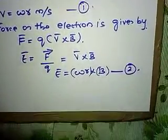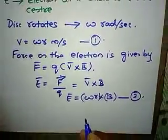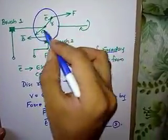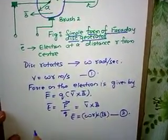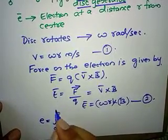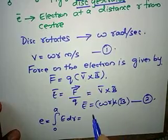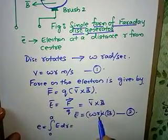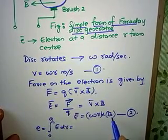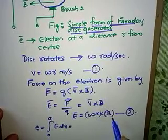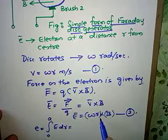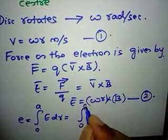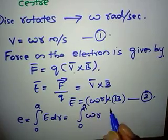Next let us find the EMF produced between the center of the disk and the rim of the disk. This EMF is given by E = integral from 0 to a of E dr, because the EMF E varies with respect to radius r. E is a function of r — as the radius changes the EMF also changes. Omega is fixed, B is fixed, where omega = 2 pi f is the angular frequency. So you are integrating with respect to r from 0 to a, giving integral of omega r B dr.